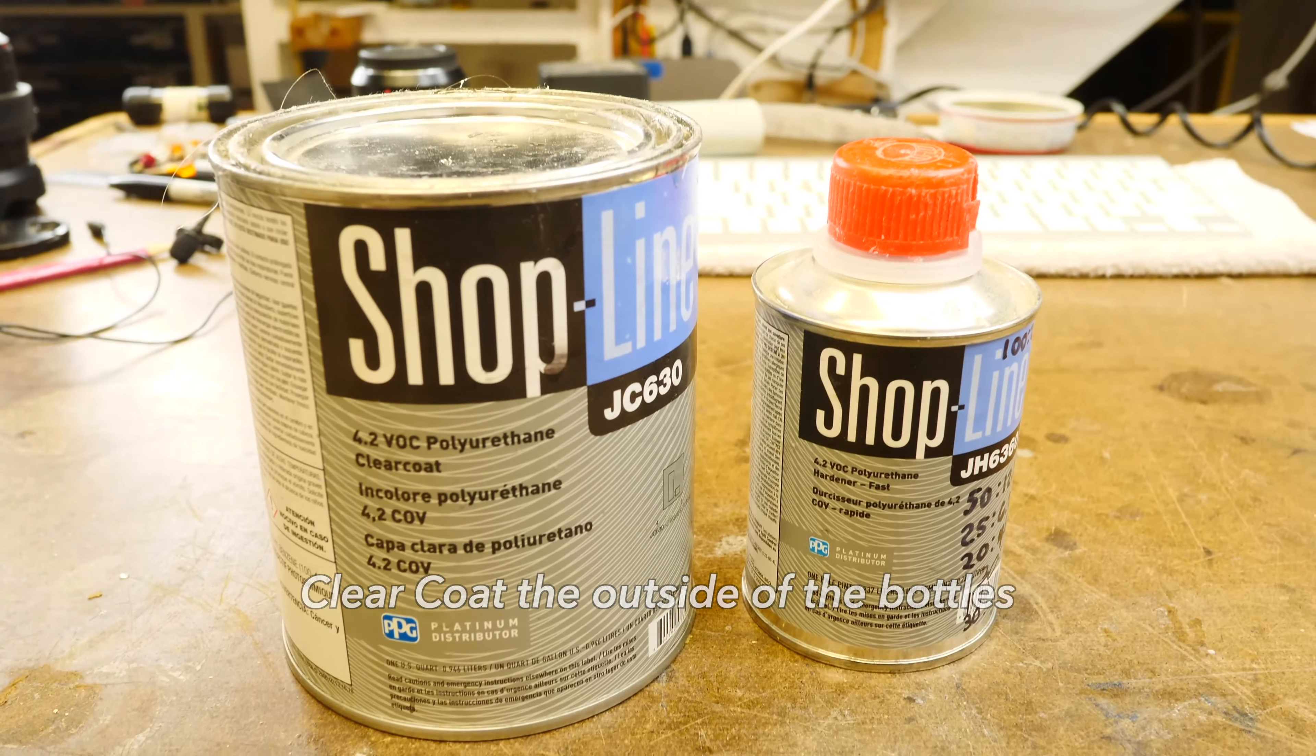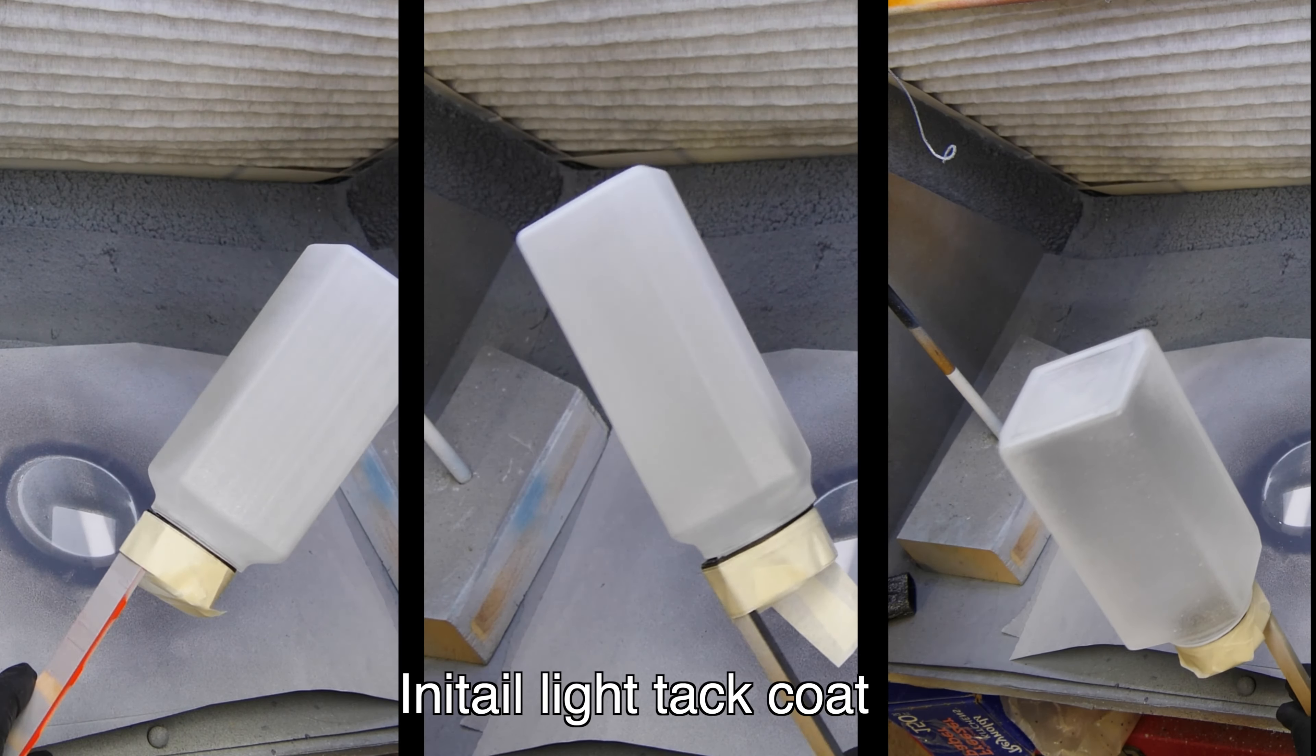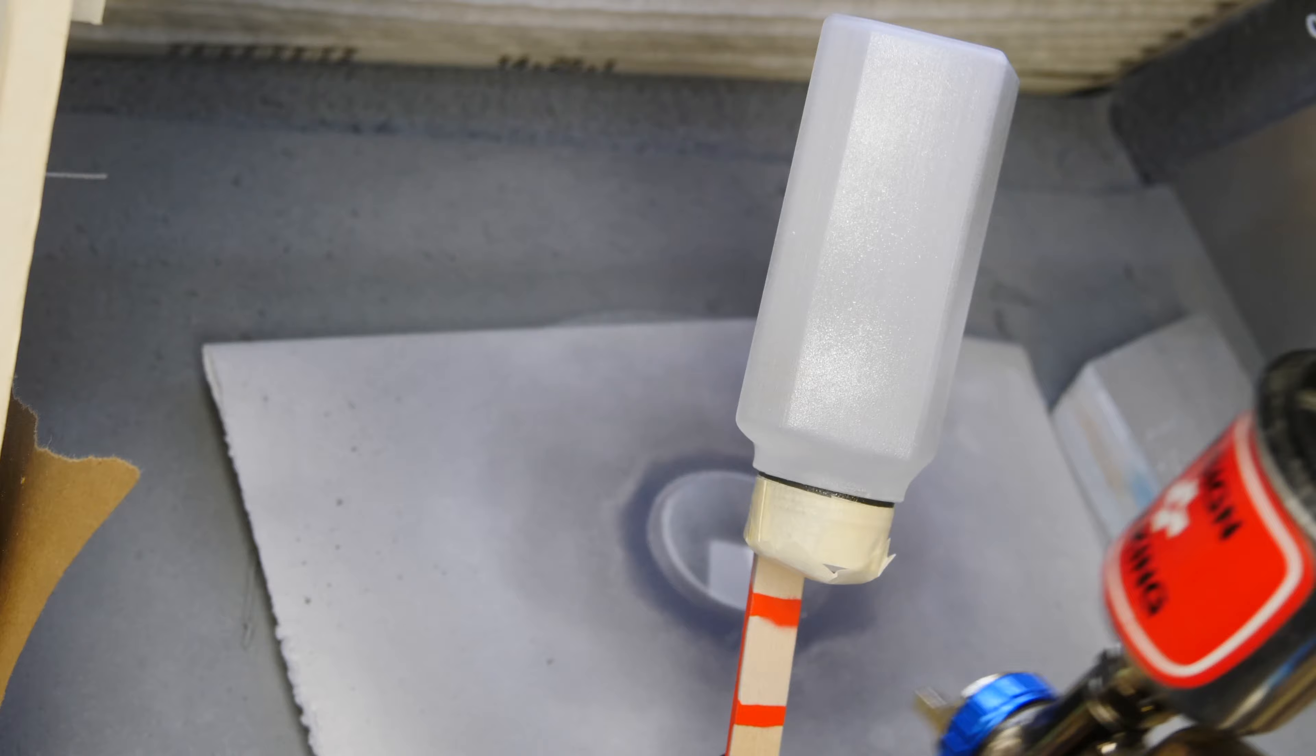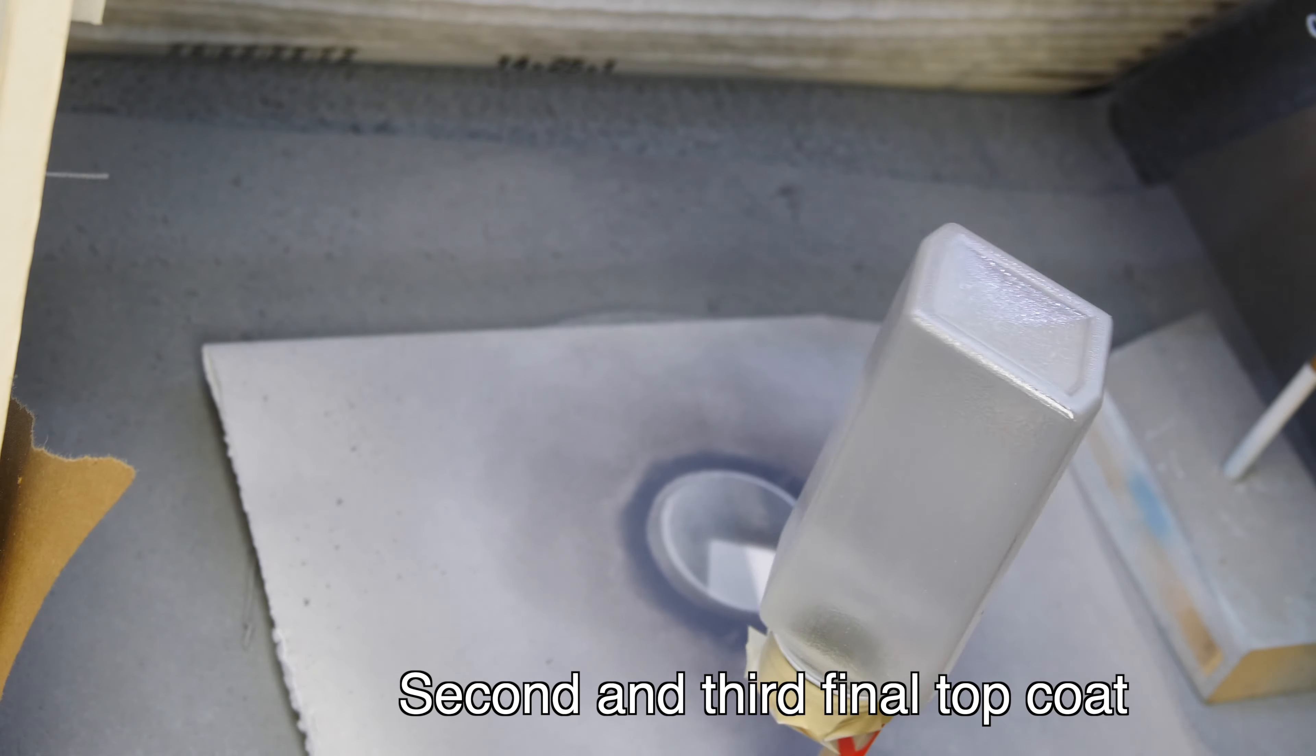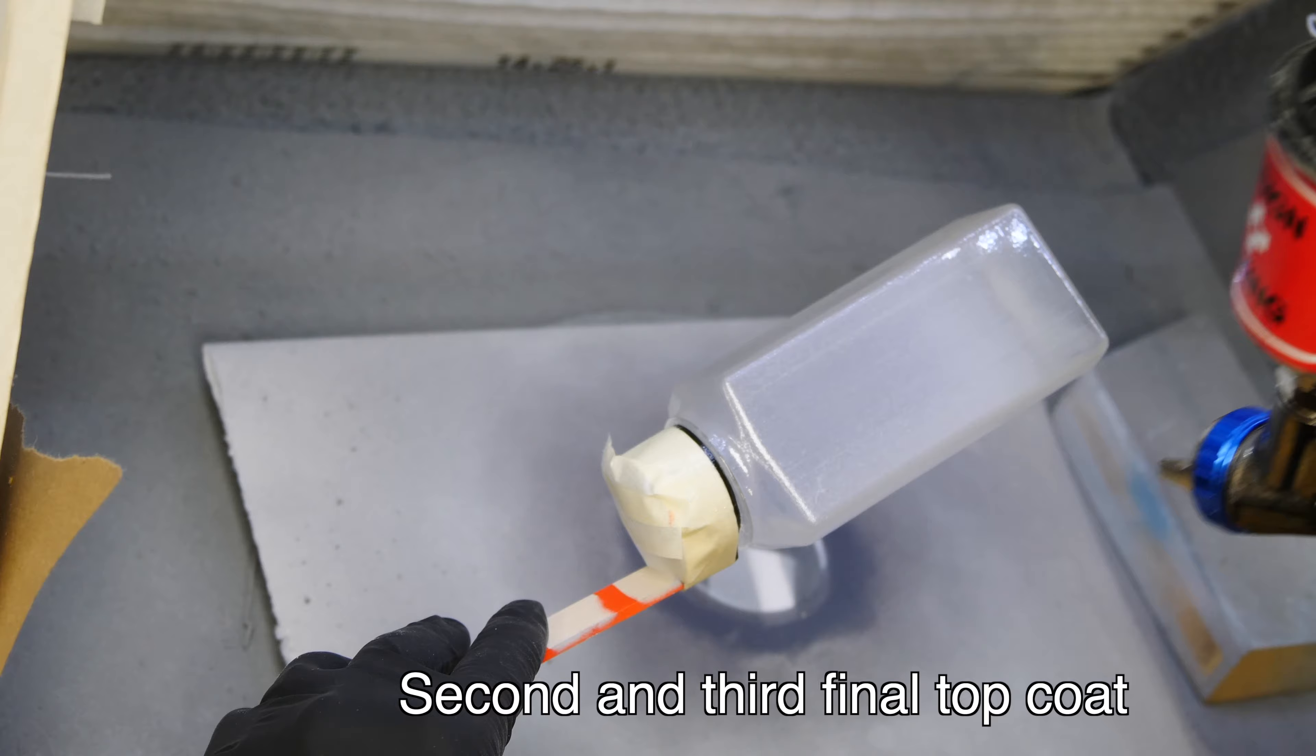I'm using a two-part clear urethane clear coat from PPG. I'll link to something similar in the description below. The first coat is being sprayed on. It's a very light initial tack coat just to get some urethane on the outside of the bottle. We'll let that flash for just a few moments and then we're going to come back and put on a light second layer and then a final third top coat on each of the three bottles.